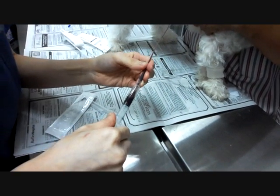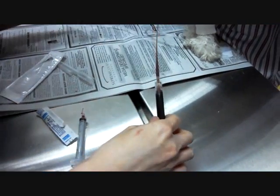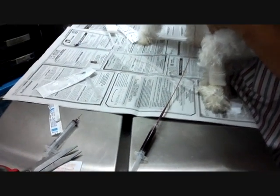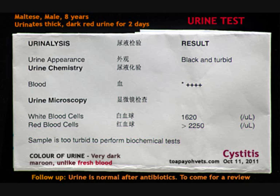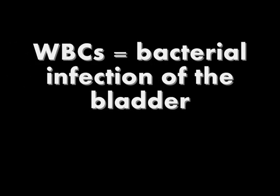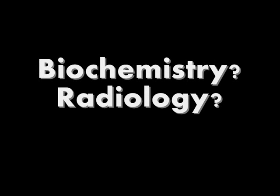In this case, a semi-plastic urinary catheter was used. This can be used for either sex, male or female. The tip of the catheter was lubricated with lubricant before insertion to minimize urethral trauma. The urine is then withdrawn with a syringe attached to the other end. The urine test revealed infection in the urinary system. There was a lot of blood and white blood cells. The white blood cells indicate a bacterial infection of the bladder, while the red blood cells indicate inflammation of the bladder. However, no further biochemistry could be done due to the overwhelming amount of blood, and x-rays showed that there are no radio-dense urinary stones.